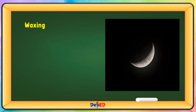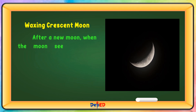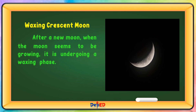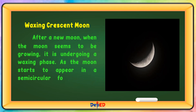Waxing Crescent Moon — After a new Moon, when the Moon seems to be growing, it is undergoing a waxing phase. As the Moon starts to appear in a semi-circular form, the waxing crescent starts to appear.